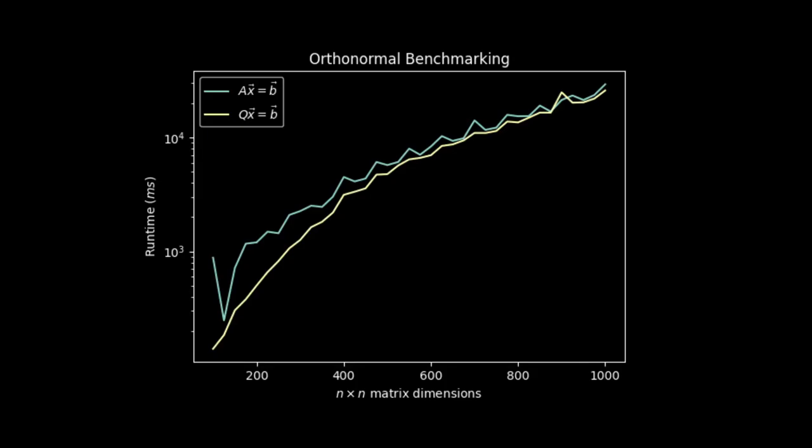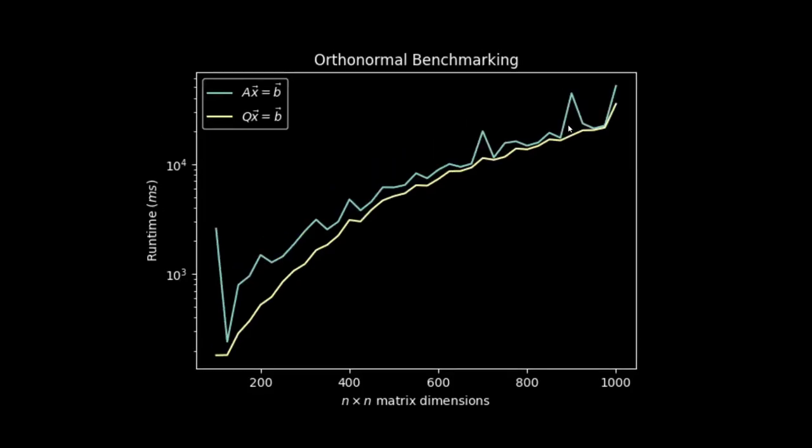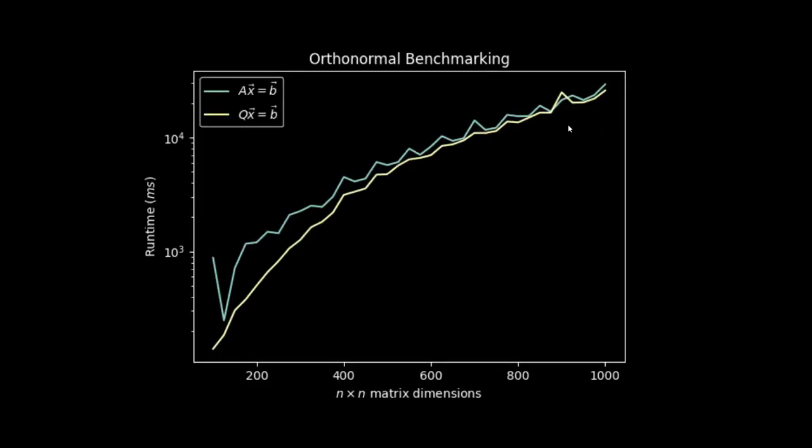Now running this a few more times, this is about the smoothest result that I could end up getting, so we're going to ignore these points right here just because there's something weird going on and my virtual machine is acting up. So we see the same trend where our Qx equals b system is solved significantly faster at the smaller dimensions, and even as we scale it is still being solved faster than Ax equals b, with the exception of this one outlier right here. Between this first run and the second run our Qx equals b system is being solved significantly faster.